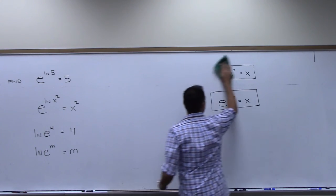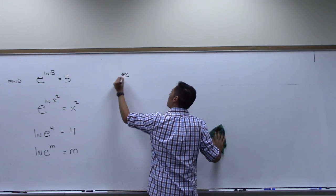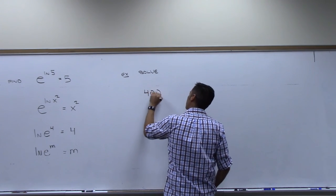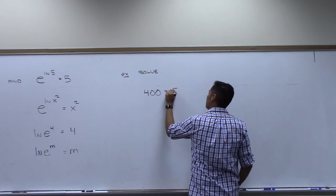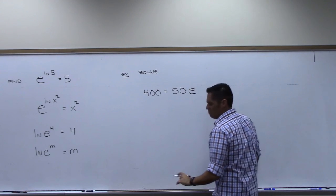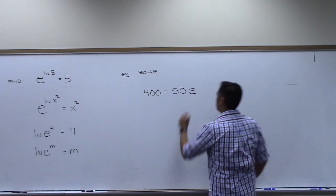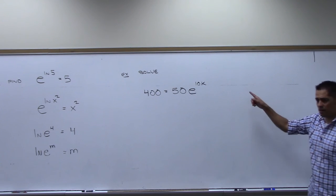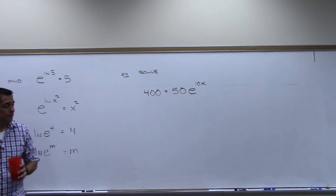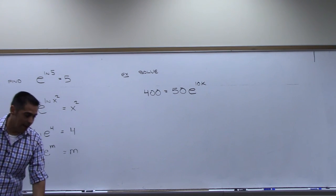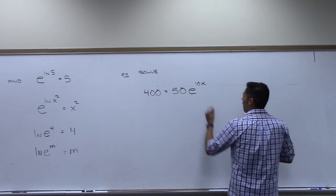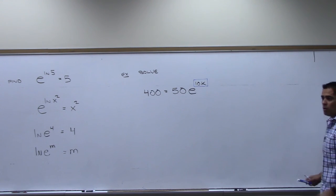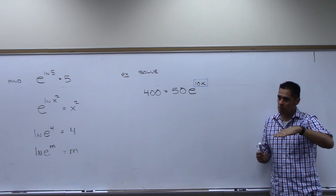Let's actually solve some equations. How about: 400 equals 50 e to the 10k, and we're solving for k. So how we do this: we are trying to get the 10k to drop off the exponent so we can solve for it. I must first get that 50 out of there because I need just e to something on this side.